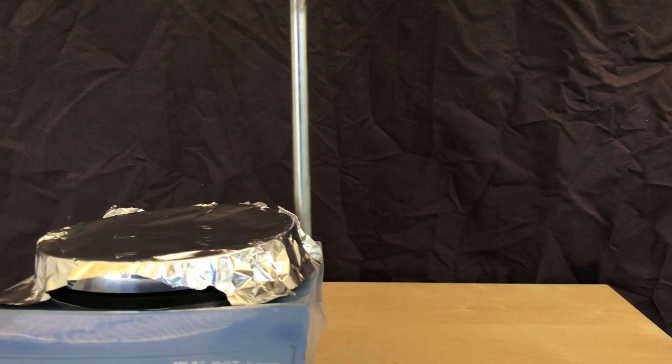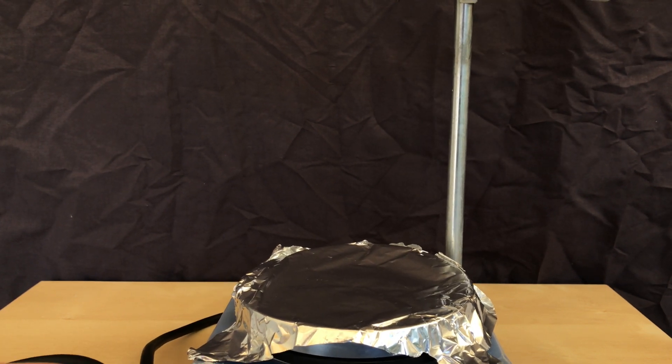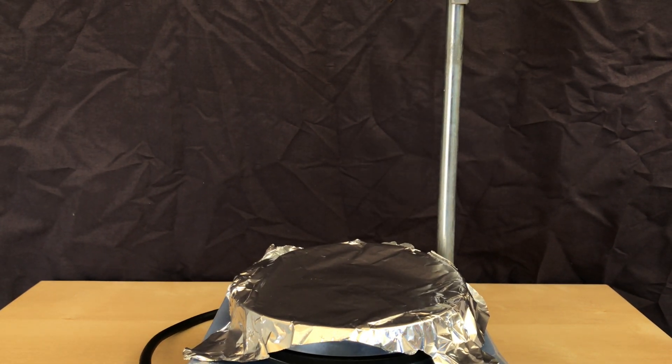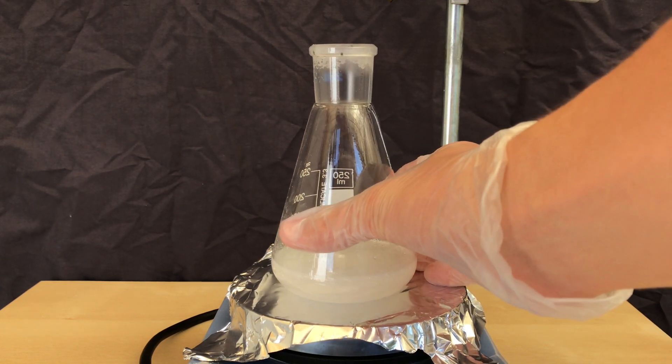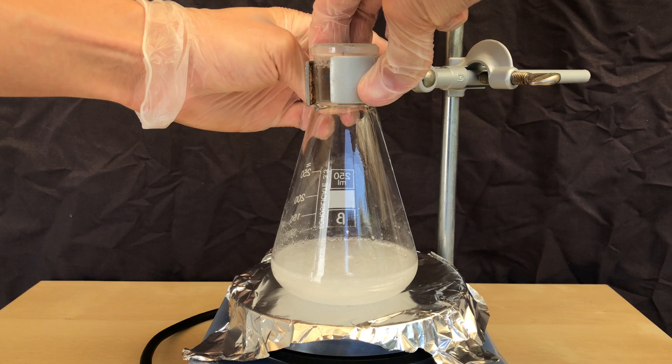The first part of the apparatus was now set up. A magnetic stir plate is used and we placed the Erlenmeyer flask on top of it. To keep it in place it was clamped down.